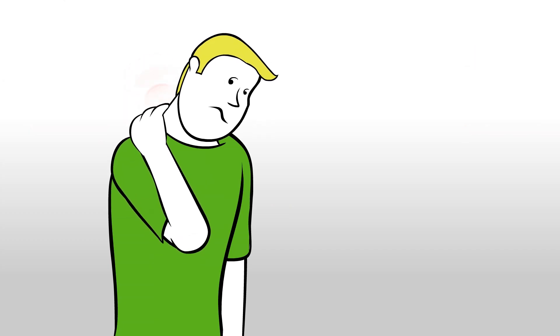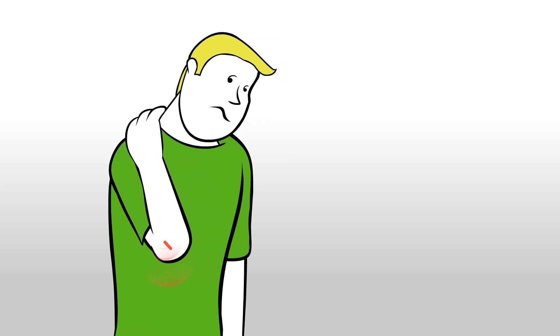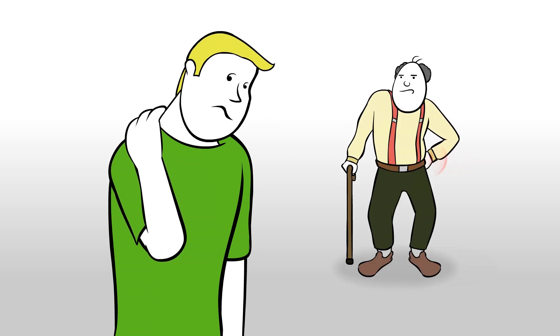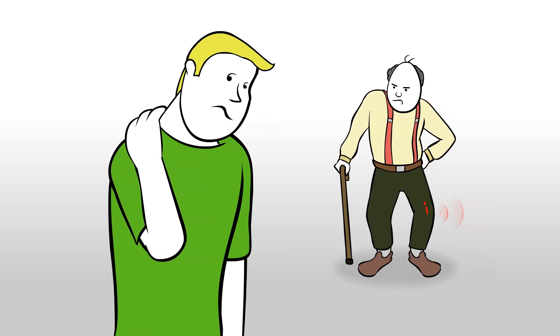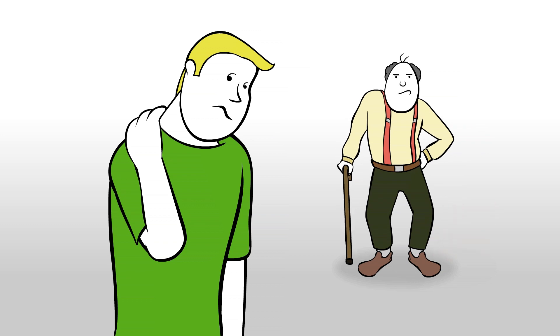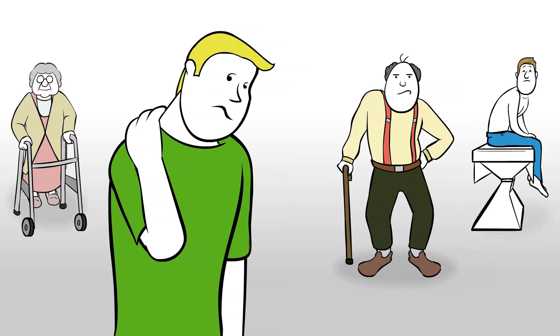When this happens, a bulging disc in your neck may cause tendinitis in the elbow, or a pinched nerve in your back may lead to hip, knee, or ankle problems. It's easy to see why so many people require treatment for disc-related problems.